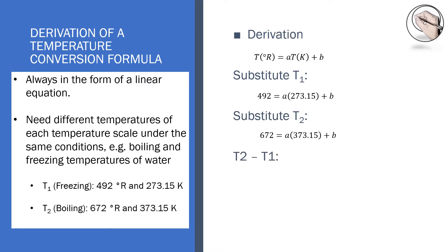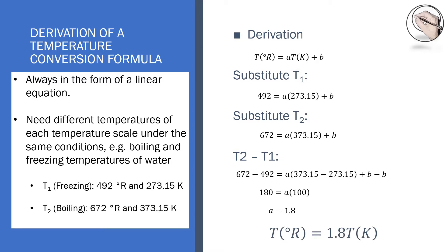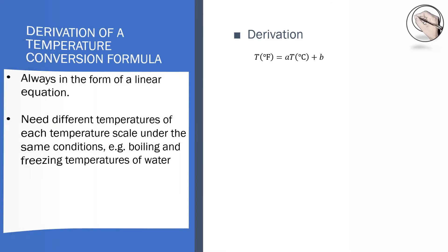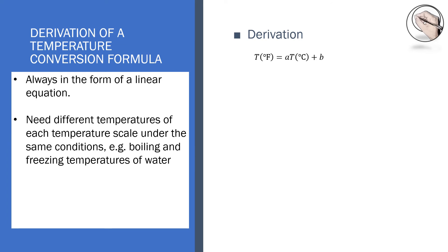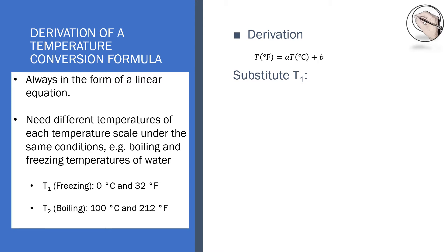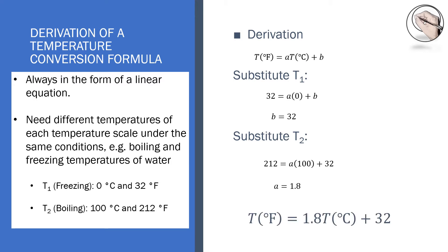If we subtract T2 from T1, we can calculate the constant A, which is commonly known as the slope or the gradient. Since constant B is zero, our formula reduces to this when we replace A in the linear equation. If you wanted to find the formula to convert the temperature expressed in centigrade to its equivalent in Fahrenheit, you'd need to follow the same procedure of solving simultaneous equations. Substitute the freezing point temperatures into the linear equation to solve for constant B, then substitute the boiling point temperatures and constant B to solve for constant A. Substituting constants A and B into the linear equation gives us the temperature conversion formula we needed.